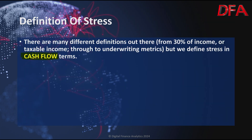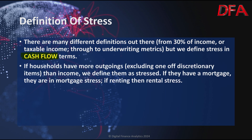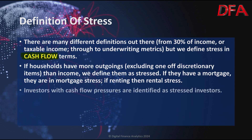When we're talking about stress, we use a specific definition. It's in cash flow terms — money in, money out. I don't use a generic 30% of income or even taxable income, but look at it in cash flow terms. If households have more outgoings than income, we define them as stressed. If they have a mortgage, they're in mortgage stress; if renting, they're in rental stress; investors with cash flow pressures are identified as stressed investors.